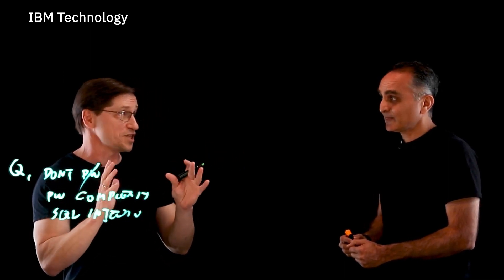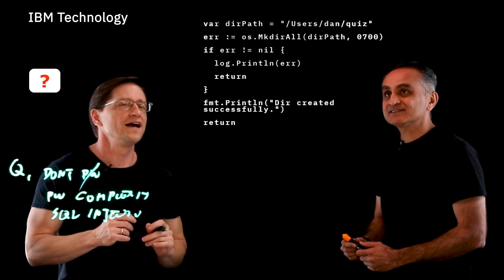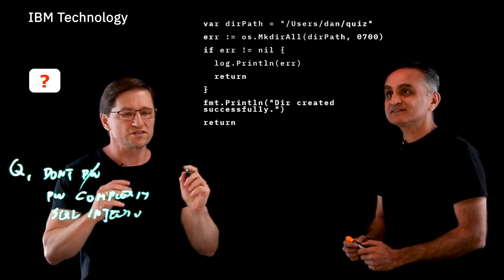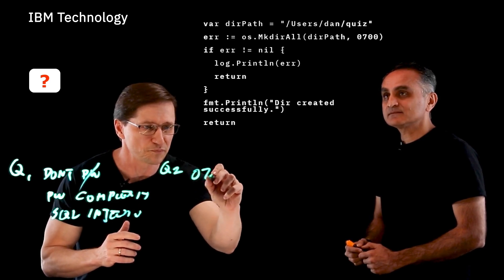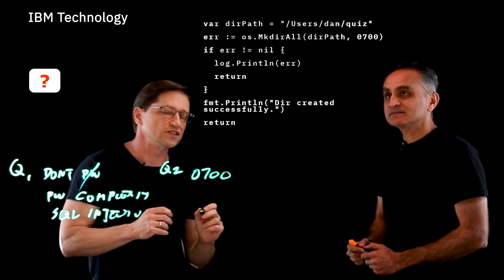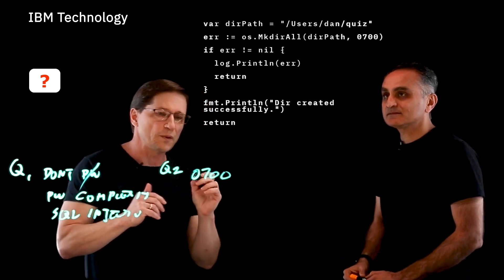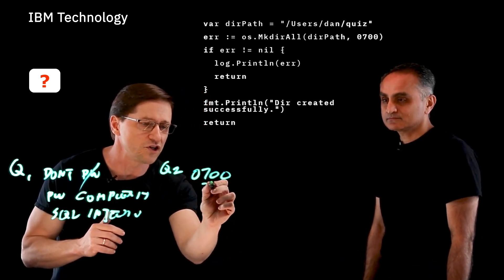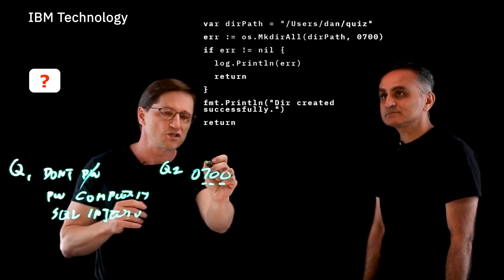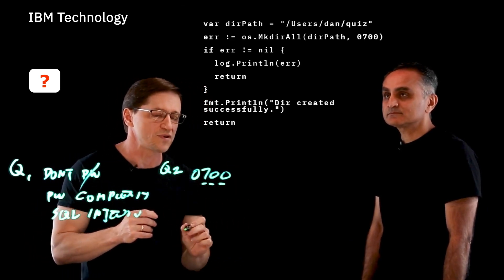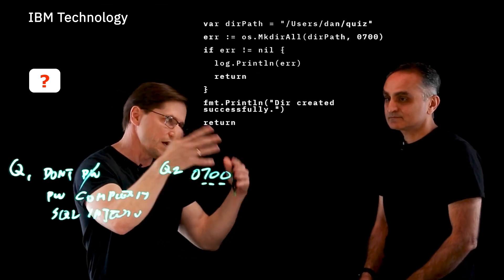Now we're going on to the second one, which wasn't quite so easy. This requires a little bit of explanation for Q2. You see this permission here of 0700. For those newer to Unix, that's referring to the file permissions — it's a bit pattern where each one of these numbers represents the permissions for the owner, group, and everyone.